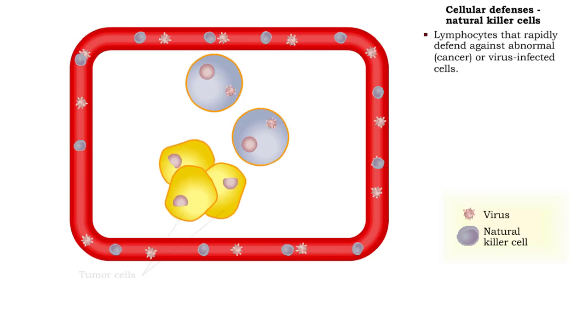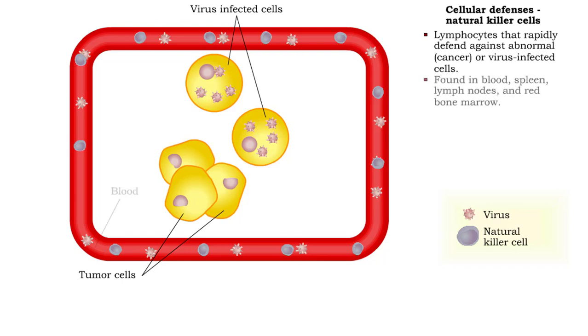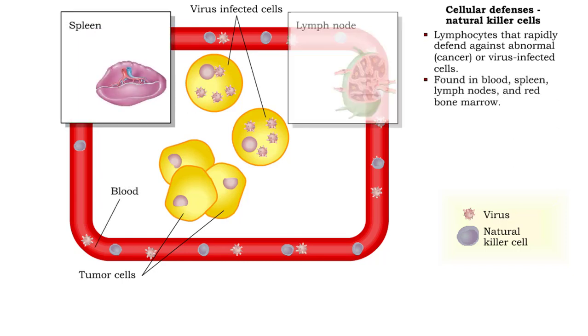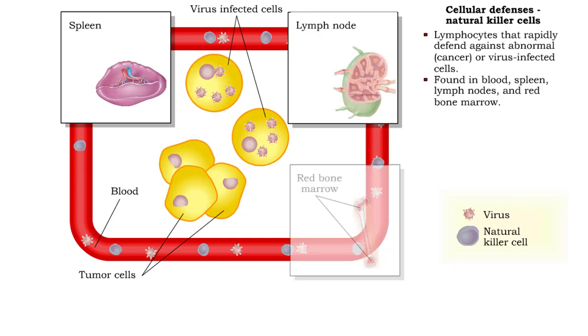Natural killer cells are lymphocytes that provide a rapid defense against abnormal or virus-infected cells. They are found in the blood, spleen, lymph nodes, and red bone marrow.